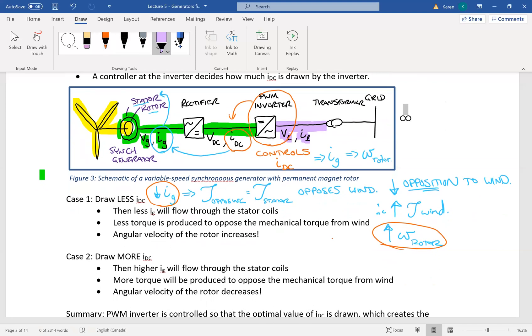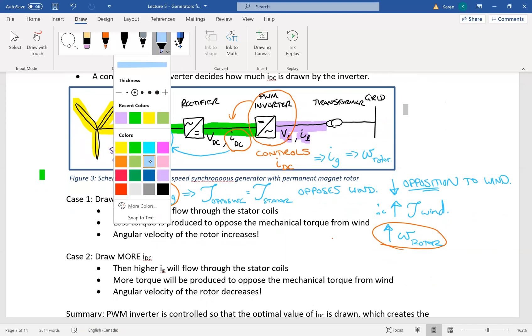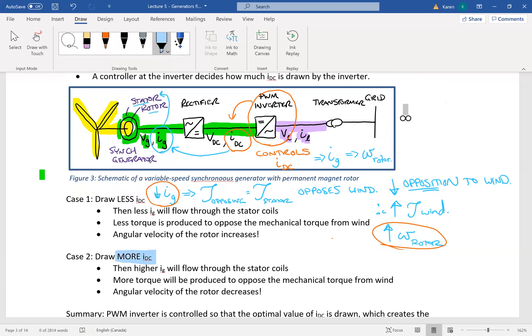And on the same principle, we could look at if we drew more current, we increase the current, then it's going to increase the flow through the stator coils, which will create more torque. And that torque opposes the mechanical torque from the wind. And if you're opposing the mechanical torque from the wind, it's going to, in effect, slow down that rotor.